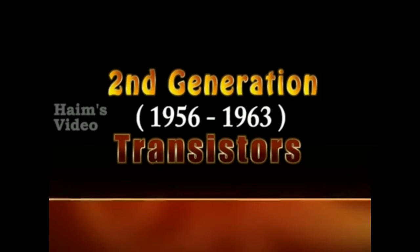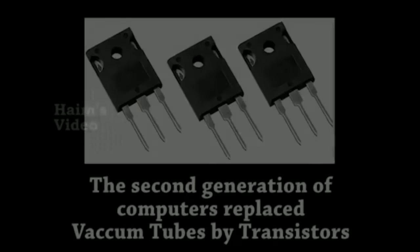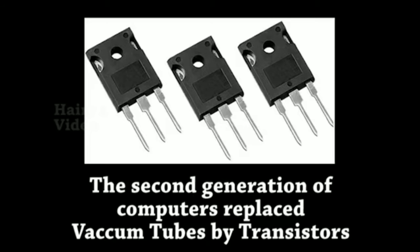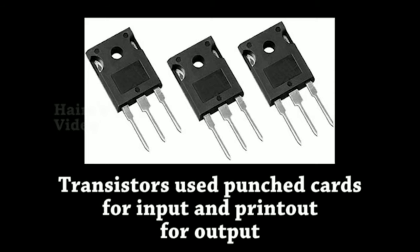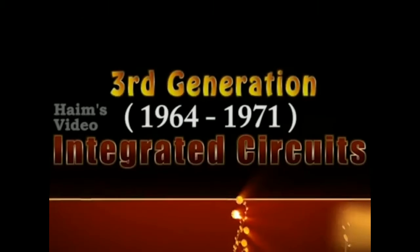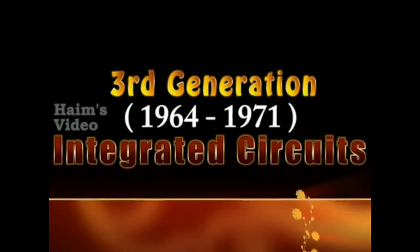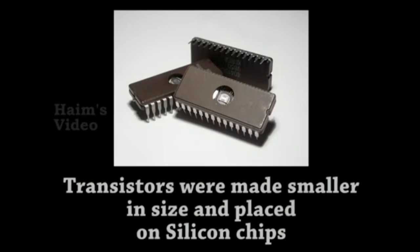Second generation, from 1956 to 1963 — transistors. The second generation of computers replaced vacuum tubes with transistors. Transistors used punch cards for input and printouts for output.